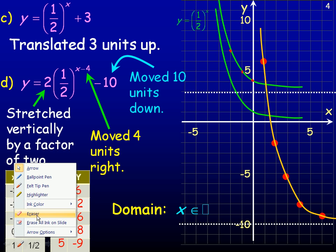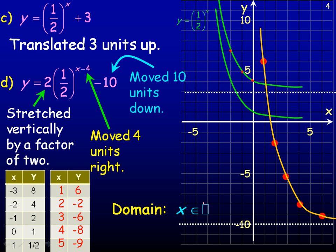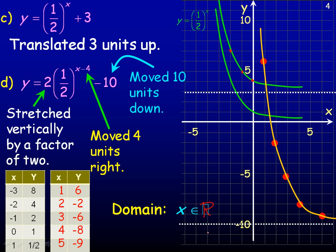The range is the set of all real numbers with the restriction that the y values have to be greater than negative 10. There's a horizontal asymptote here at negative 10. And the curve comes down and gets closer and closer to it, but never actually gets a y value of negative 10. So the y values are always just greater than negative 10. And that's the end of the PowerPoint.